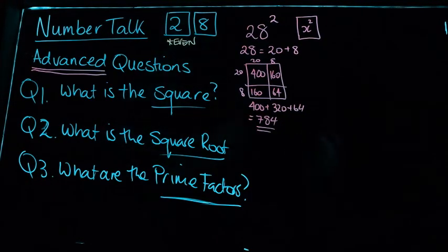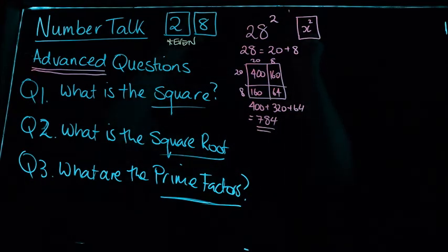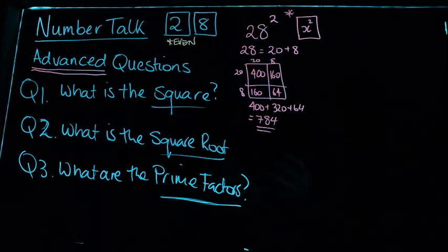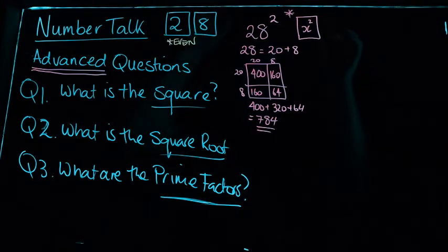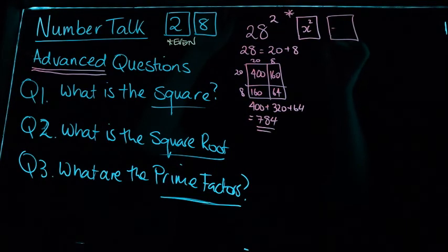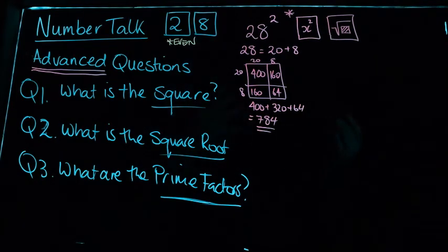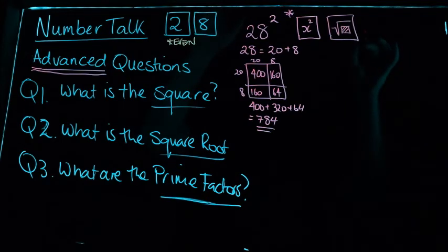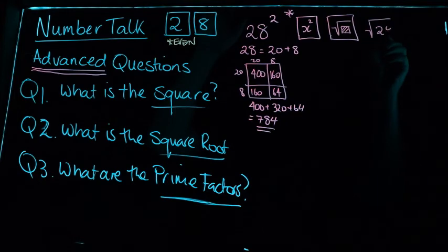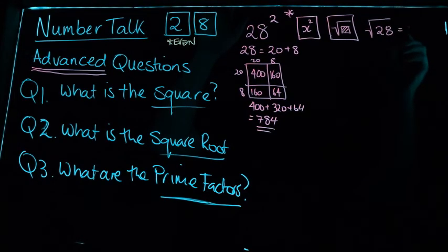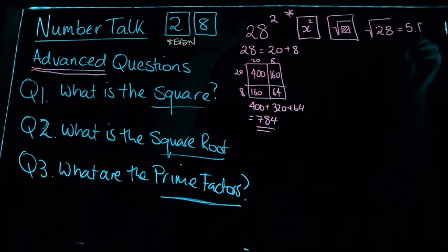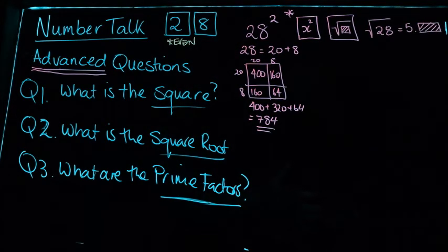The next question is the square root — there's a square root button on your calculator right beside the square button, because these are opposite operations. The square root of 28 will come out as 5 point something. You'll notice this is an irrational number — the decimals do not repeat and have no pattern. Perhaps round it to 3 decimal places.